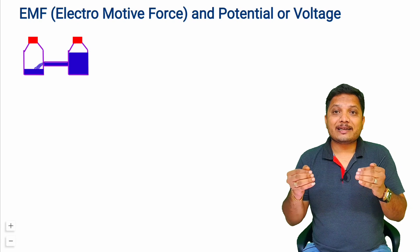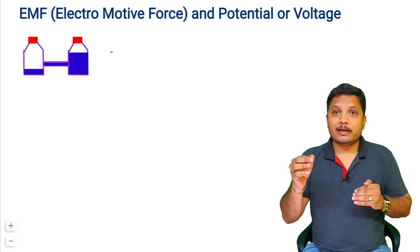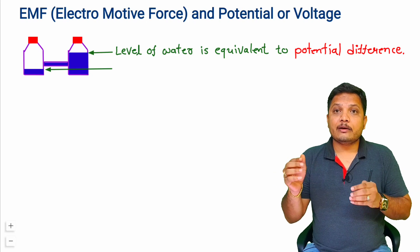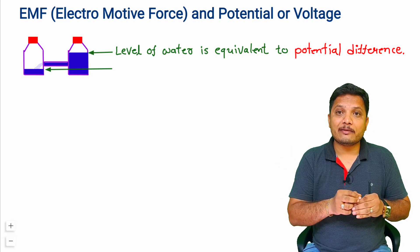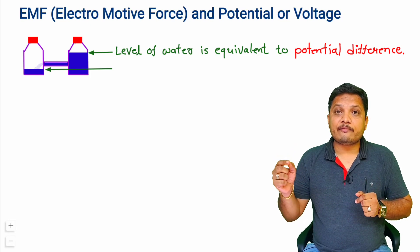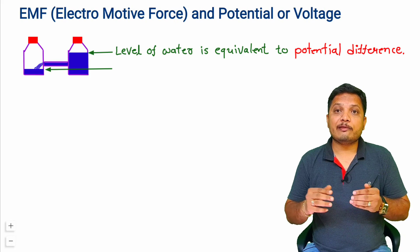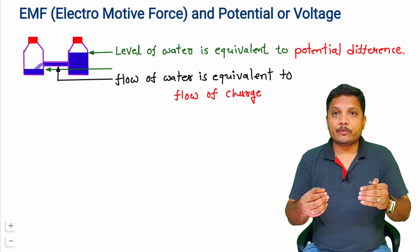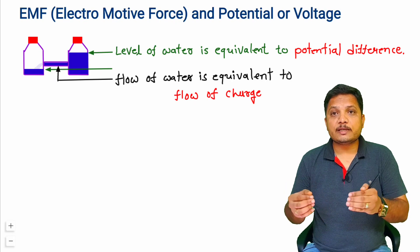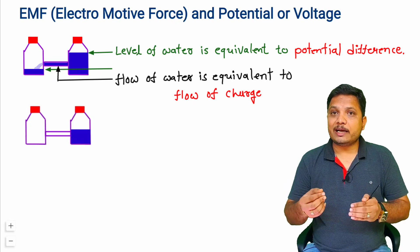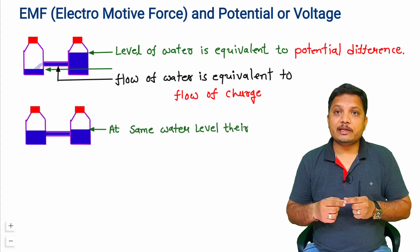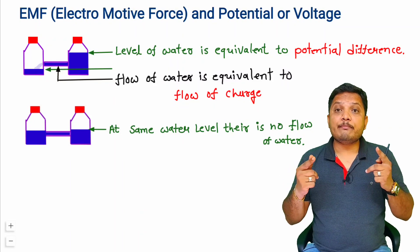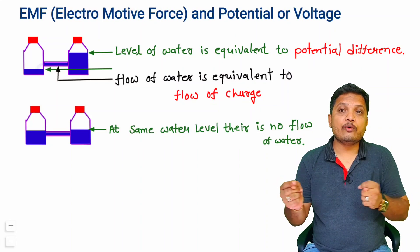This water level difference can be considered as a potential difference, and the flow of water from higher to lower water level happens because of that water level difference. That flow of water you can consider as the flow of charge. After some time, once both bottles reach the same water level, there will be no more flow of water between them. Similarly, once both have the same potential, there will be no flow of charges.